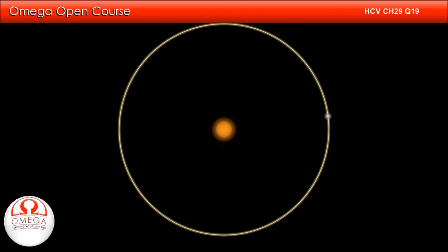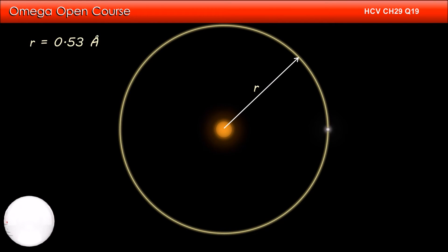In the ground state, the electron of a hydrogen atom moves around the proton in a circular orbit of radius 0.53 angstrom. The required centripetal force is provided by the electrostatic attraction between the electron and the proton.